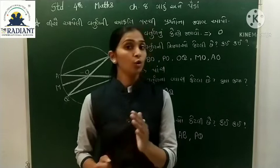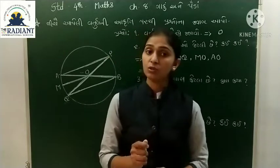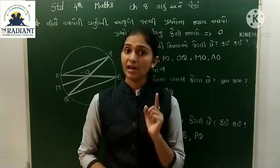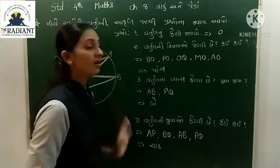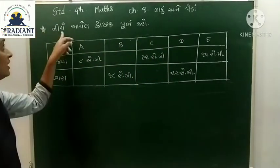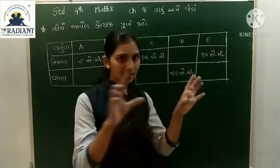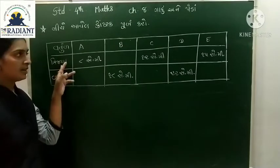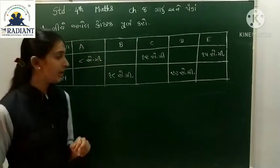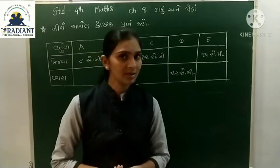વિદ્યાર્થી મિત્રો, આ રીતે તમને આકૃતિ આપેલી હોય અને એના ઉપરથી પ્રશ્નના જવાબ લખવાના હોય, તો આ રીત પ્રમાણે લખજો. ચોક્કસ માહિતી મેળવવા માટે વ્યાખ્યાની તૈયારી કરો. આ કસ્ટક: વળ્તુળ A, B, C, D અને E - આ રીતે વળ્તુળ દોરેલા છે.